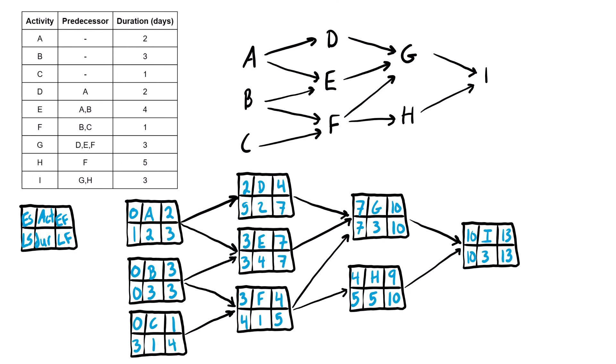Now we want to identify the critical path. Any activity that is critical has the early start equal to the late start, or the early finish equal to the late finish. Activity B is on the critical path. Activity E is also critical because we have early start three equals late start three, and early finish seven equals late finish seven. Activity G is also critical. So we go from B to E to G, and then to I, where early start equals late start at ten and early finish equals late finish at thirteen. The critical path is B → E → G → I.